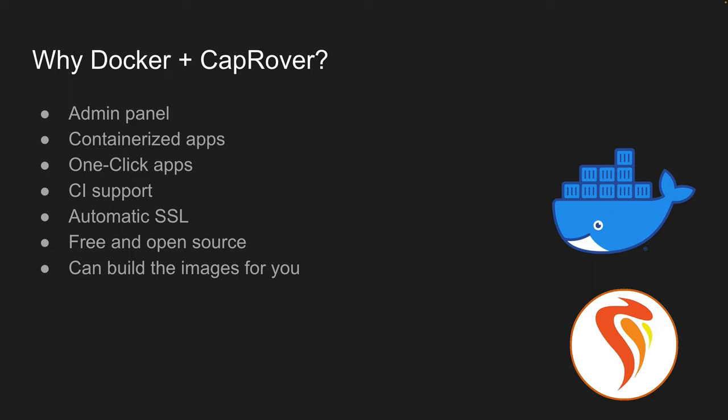Another great feature of CapRover is one-click apps. They have a catalog of hundreds of different apps and with just a few clicks you can install Redis, Postgres, MySQL, or more complex ones like WordPress. CapRover also has continuous integration support — we'll show in the demo how to connect it to GitHub Actions for a full CI flow. It also provides automatic SSL certificates using Let's Encrypt, so you get free SSL for all your apps. CapRover is free and open source, written in TypeScript, so you can even contribute to it.